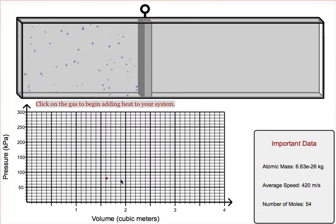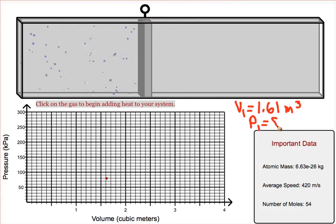We start out by estimating the original volume and the original pressure. I would estimate this original volume at about 1.61 meters cubed and the original pressure at around 80 kilopascals.